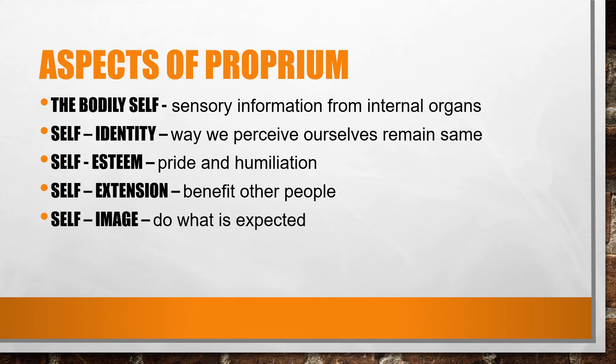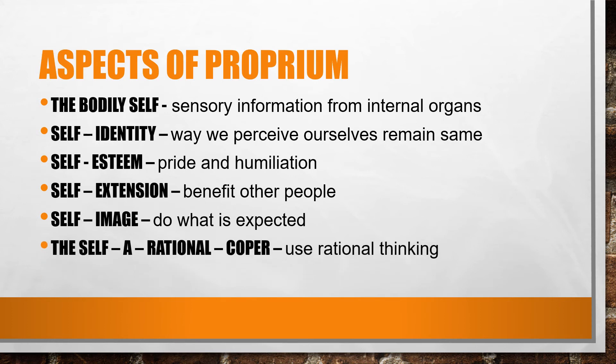Self-image: children learn to do things that other people expect from them and they avoid behaviours that will bring disapproval. The self as rational coper is seen from six to twelve years of age. Children engage in reflective thought; they begin to sense their rational powers and they want to exercise them.